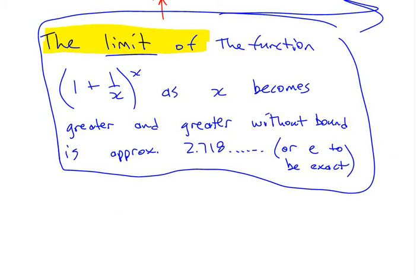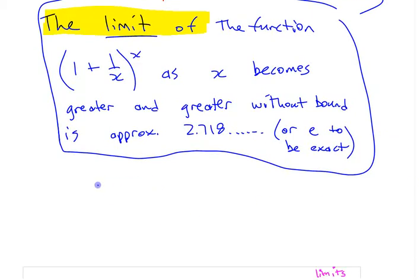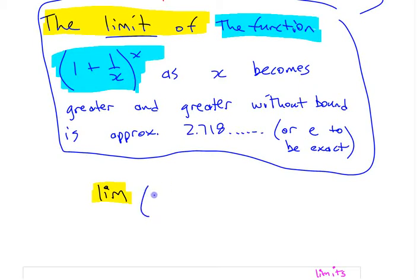If you understand it with words or you understand the concept, then writing the symbols is not that hard. The limit, a good way to abbreviate that would be LIM. The function is that, you just write that limit and then you write that function, 1 plus 1 over x to the x.